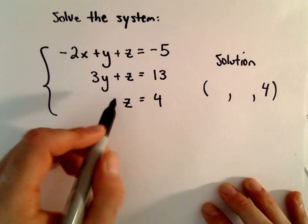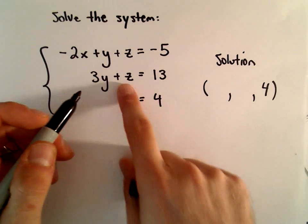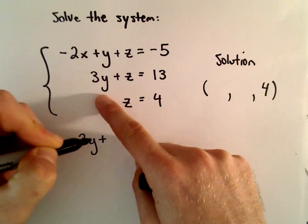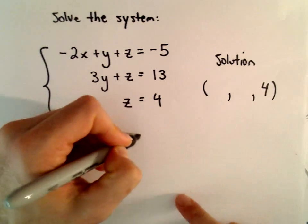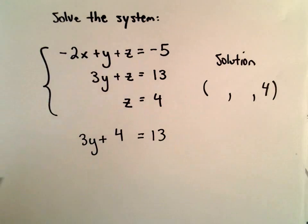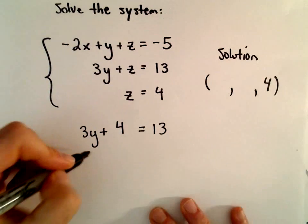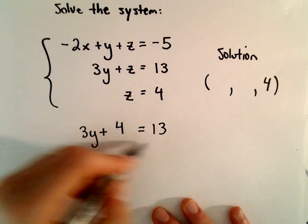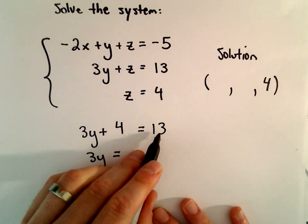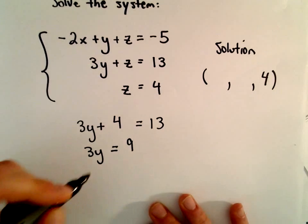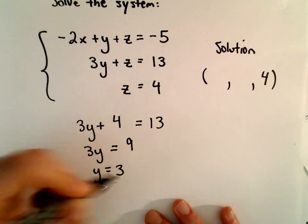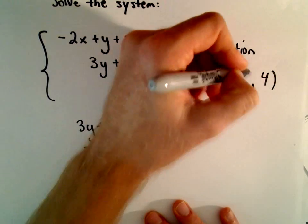To get the y value, we can just substitute that back into the second equation. So we have 3y plus z equals 13, and z equals 4. If we subtract 4 from both sides, we'll have 13 minus 4 is 9. Then if we divide both sides by 3, we'll have simply that y equals 3.